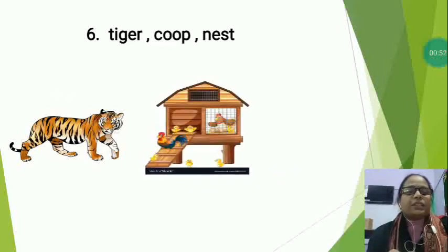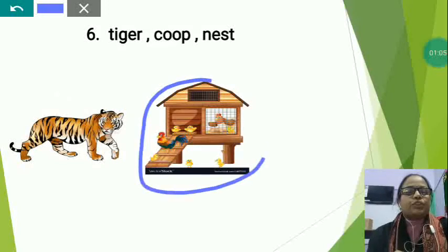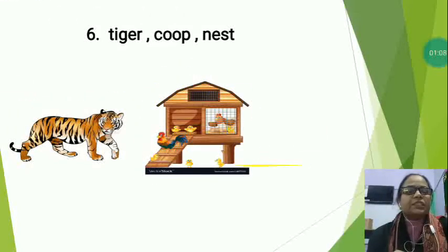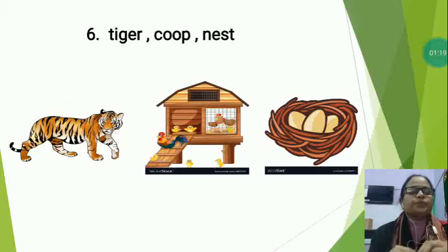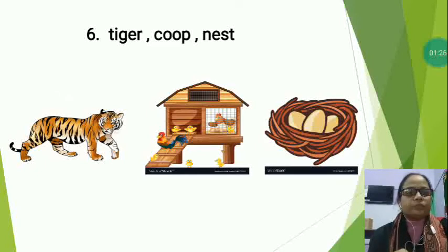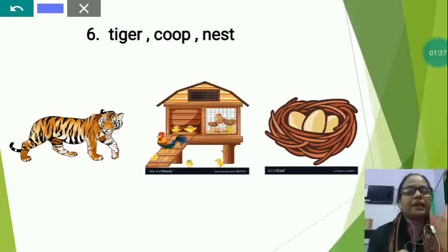Now this is coop — the home of hen. Hen lives in a coop. Now this is nest — the home of birds. Birds make nests on branches of a tree and lay eggs there. So tell me, students, which one is the different? Nest is the home of bird and coop is the home of hen. Tiger is the different because tiger is a wild animal. So we will circle tiger.